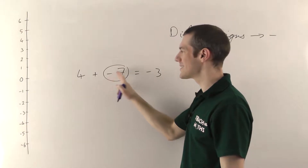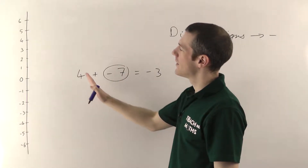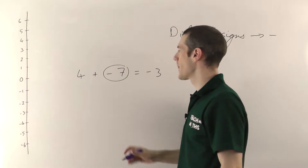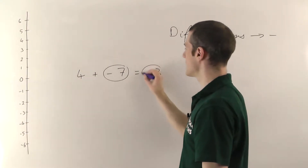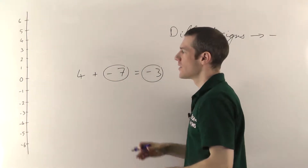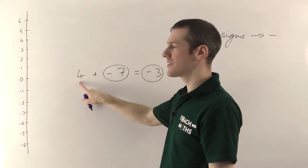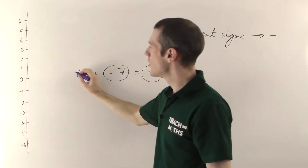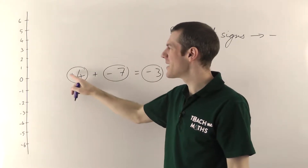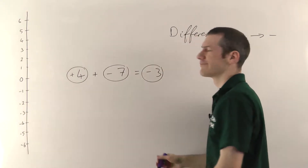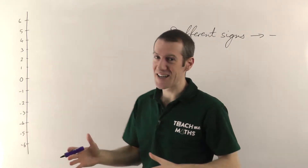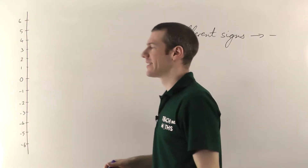One general point: signs attach themselves to the thing on the right. So the minus sign belongs with the seven. In maths, everything always has a sign — it's either a plus or a minus. The minus in front of the three makes it minus three; the minus attaches to the seven making it minus seven. If it's a positive number and the first thing written, we don't write the plus sign, but it's still there — an imaginary plus sign in front of the four.